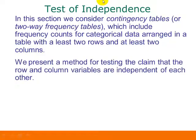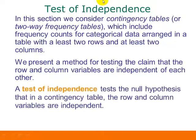We present a method for testing the claim that the row and column variables are independent of each other. A test of independence actually tests the null hypothesis that in a contingency table, the row and column variables are independent — in other words, that they're not associated with each other.